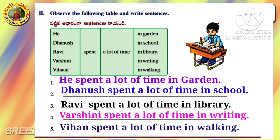First one: 'Forgive me, your highness' — who said these words? Answer: Pingala said these words. Second one: Why did the boy's seed not grow? Answer: Because the king gave roasted seeds. Third one: Who hugged Pingala? Answer: The king hugged Pingala. Fourth one: Who is the honest boy in the story? Answer: Pingala was the honest boy in the story. Fifth one: Who became the prince? Answer: Pingala became the prince.